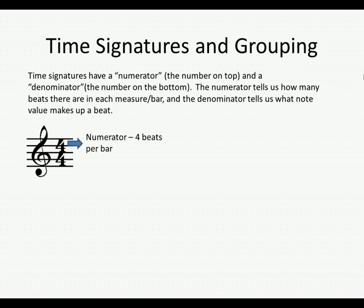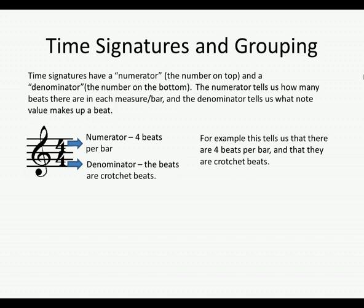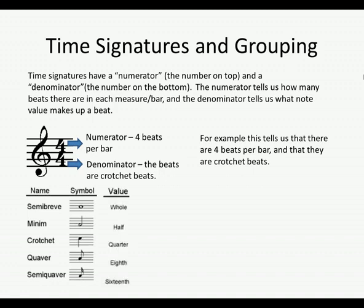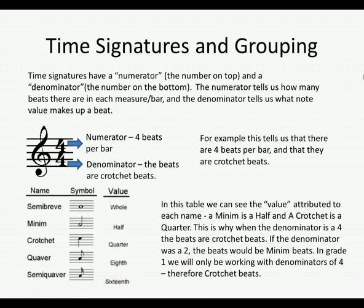The numerator tells us how many beats there are in each measure or bar, and the denominator tells us what note value makes up a beat. In 4/4, for example, the numerator tells us there are four beats in every bar, and the denominator tells us the beats are crotchet beats. In the table we can see the value attributed to each name: a minim is a half, a crotchet is a quarter, a quaver is an eighth, and a semi-quaver is a sixteenth. This is why when the denominator is a 4, the beats are crotchet beats.